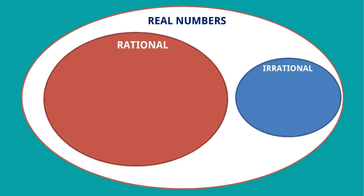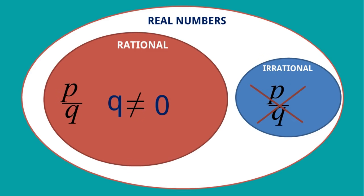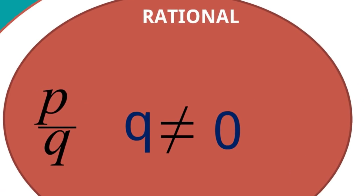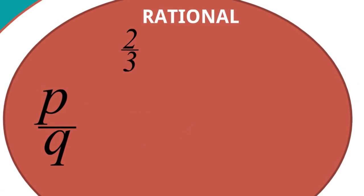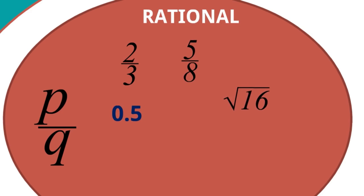Real numbers are classified into two groups: rational numbers and irrational numbers. A rational number is a number we can write in p/q form where q is not equal to zero. If we are not able to write a number in p/q form, it is an irrational number. Easy examples of rational numbers: 2/3 is p/q format, 5/8 is also p/q, and 0.5 means 5/10, so it is also p/q.